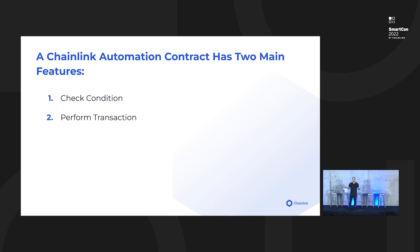Any automation in general has really two things you should consider. First is the check — something should be checking regularly to see if some automation needs to happen. That can be as simple as a time-based check: do you need something to run every hour or once a day? Or it could be more advanced: are you checking the state of the chain, the balance of a wallet, or combining lots of things to decide under what conditions you'd like to send a transaction? And then on the other side, you need to send the transaction itself and perform some work.